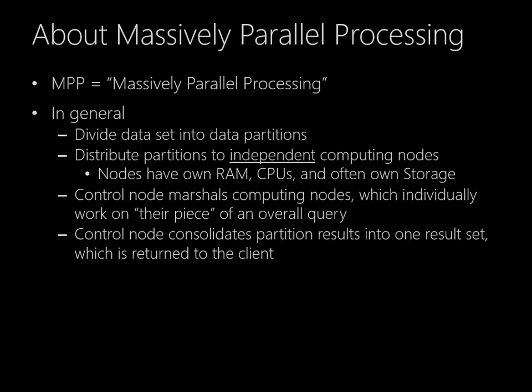We'll also have a control node of some kind, and that control node will marshal all those other nodes and coordinate them. They'll all work on their own piece of an overall query. The control node will consolidate all the work that all the other nodes are doing and return that to a client. So from the client's point of view, the database looks like one server — actually 13 in this example.